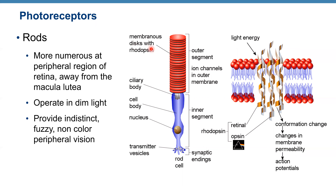Looking at one of these discs under high magnification: they are double-membrane phospholipid bilayers. Inside we have a molecule called rhodopsin. Rhodopsin has two parts: retinal and opsin. Retinal is vitamin A and opsin is a protein — so you have a protein and vitamin A, which is also a steroid vitamin.